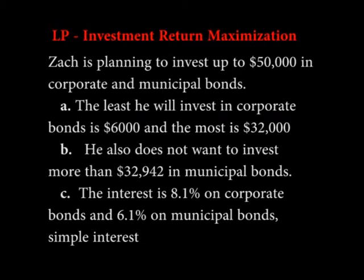We're looking at a linear program for maximizing investment. Zak has up to $50,000 to invest in corporate and municipal bonds. For corporate bonds, he doesn't want to invest less than $6,000 and no more than $32,000.